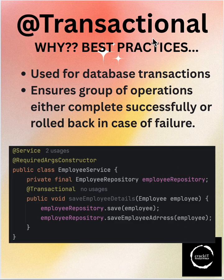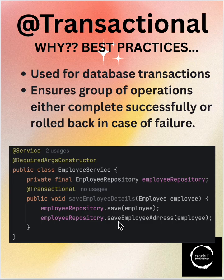Welcome to Crack It. Why do we need a @Transactional annotation and what are the best practices? The @Transactional annotation is used for database transactions — any database transaction should either complete successfully or be rolled back in case of failure. In our example, in the saveEmployeeDetails method, we have two methods: saveEmployee and saveEmployeeAddress. With the @Transactional annotation, if saveEmployeeAddress fails after saving the employee, the whole transaction gets rolled back.